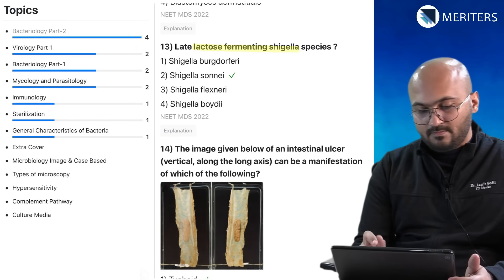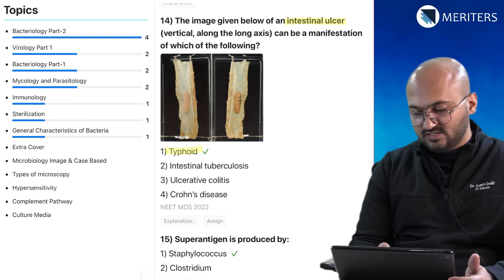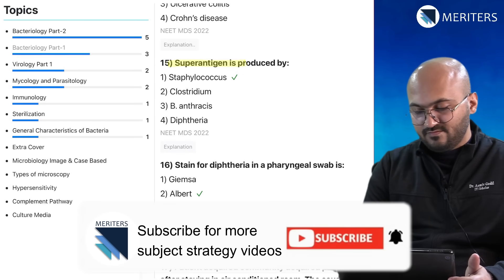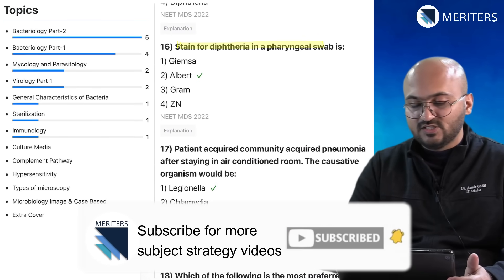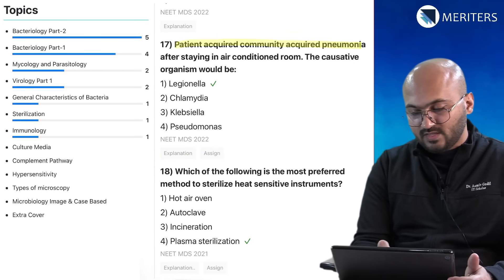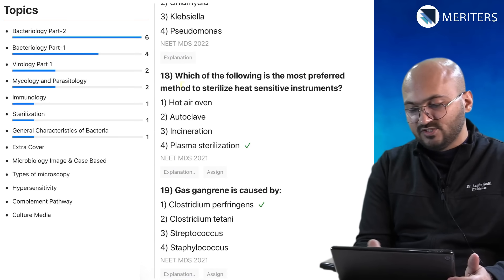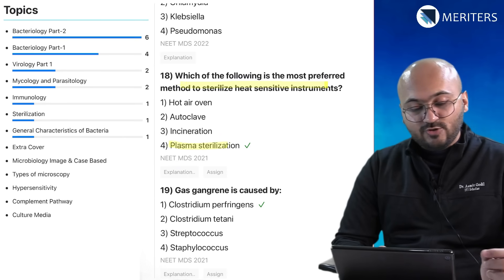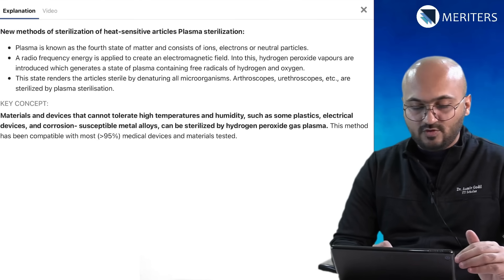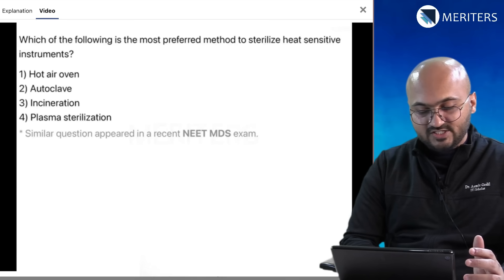Lactose-fermenting Shigella is bacteriology. Typhoid patches — intestinal ulcers — are bacteriology. Superantigen is associated with Staph. The stain for diphtheria in a pharyngeal swab is Albert stain. A patient with community-acquired pneumonia — that's Legionella, bacteriology. The most preferred method to sterilize heat-sensitive instruments is plasma sterilization. Feel free to read the explanations, take down important notes, and read the key concept for each question.